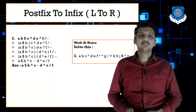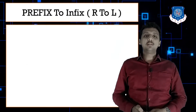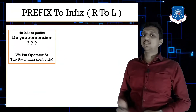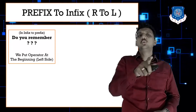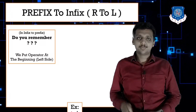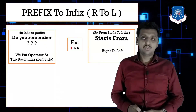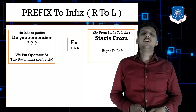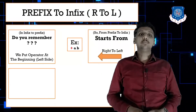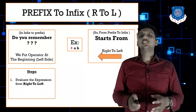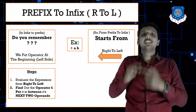Next is prefix to infix. Remember: in infix to prefix, we put the operator at the beginning — the leftmost side. So to go back to infix from prefix, we need to start from right to left. The step is: find the operator from right to left, then place it between its next two (succeeding) operands.